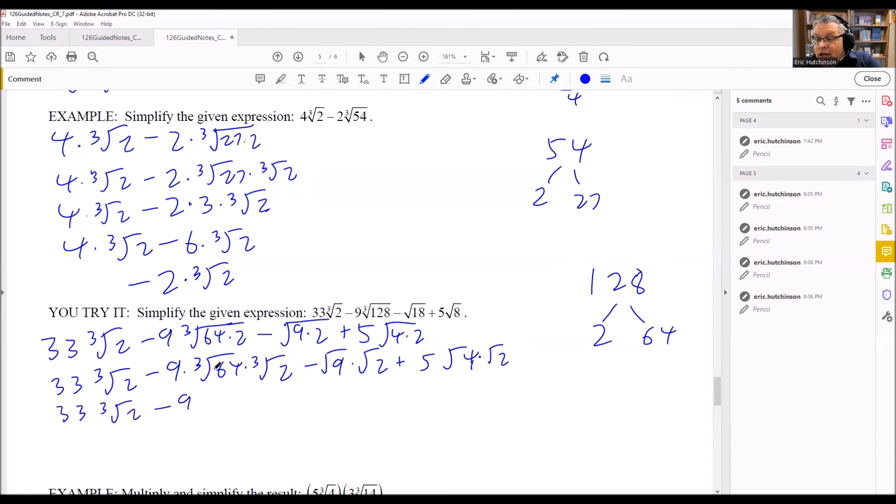Next, I'm going to go ahead and take the cube root. The cube root of 64 we already said was 4. Square root of 9 is 3, so that's 3 square root of 2. Square root of 4 is a 2 over here.